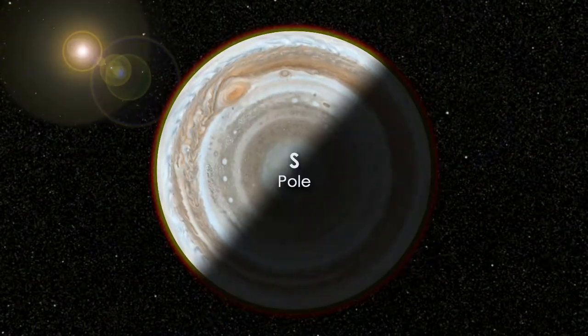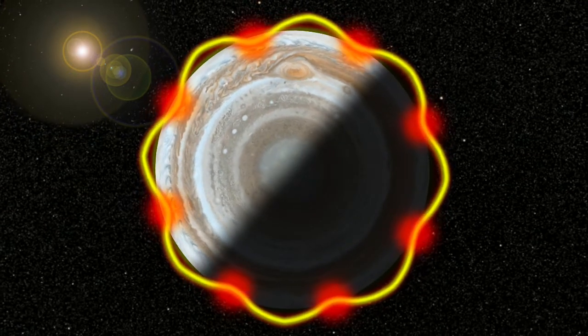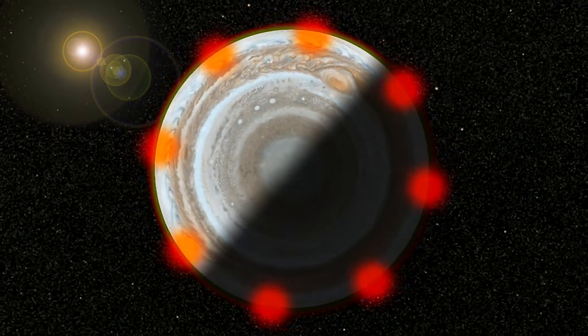So at any given time, there are approximately 8 to 10 hotspots in Jupiter's atmosphere that are spaced roughly evenly apart from one another. We believe that each of the downward portions of this Rossby wave corresponds to the hotspots that we see on Jupiter.